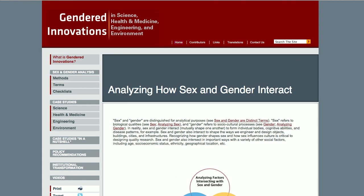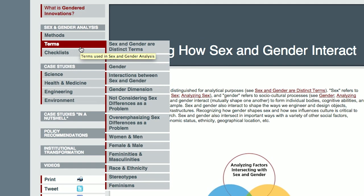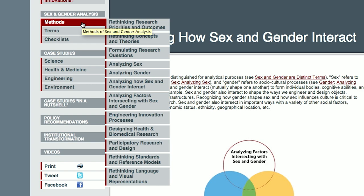What I have described here is discussed in our section on terms, and we also have a section on methods. To understand how sex and gender influence science and technology, you need to study the gendered innovation methods. The goal here is for us to understand sex and gender so that we can consciously harness the creative power of sex and gender analysis for discovery and innovation.